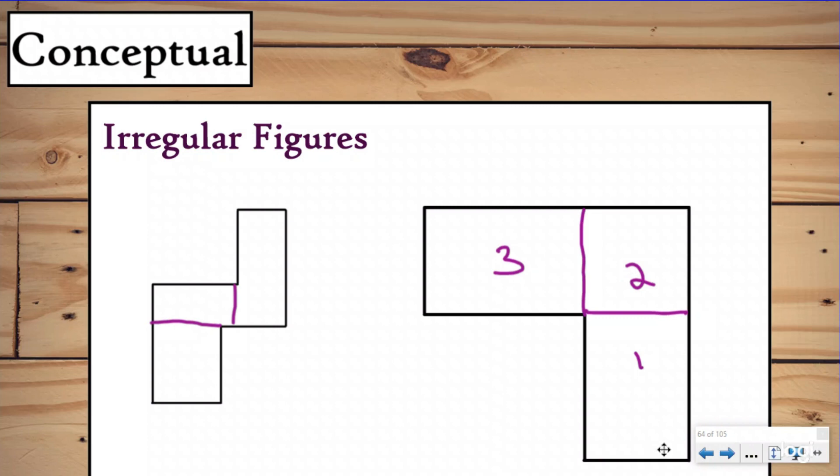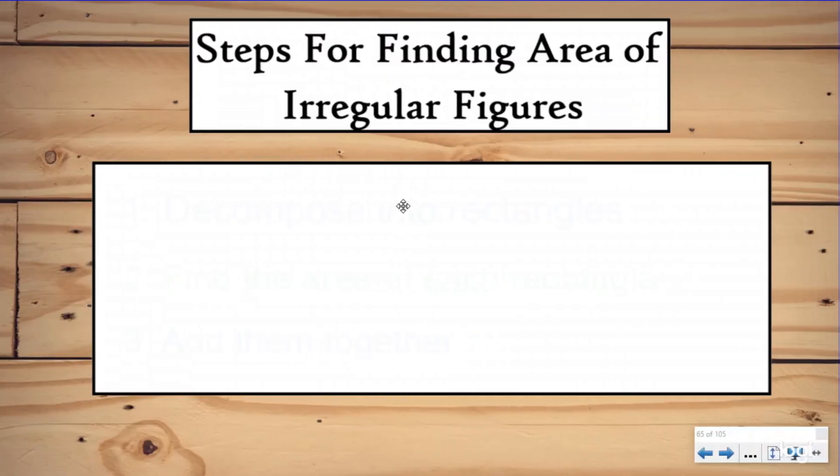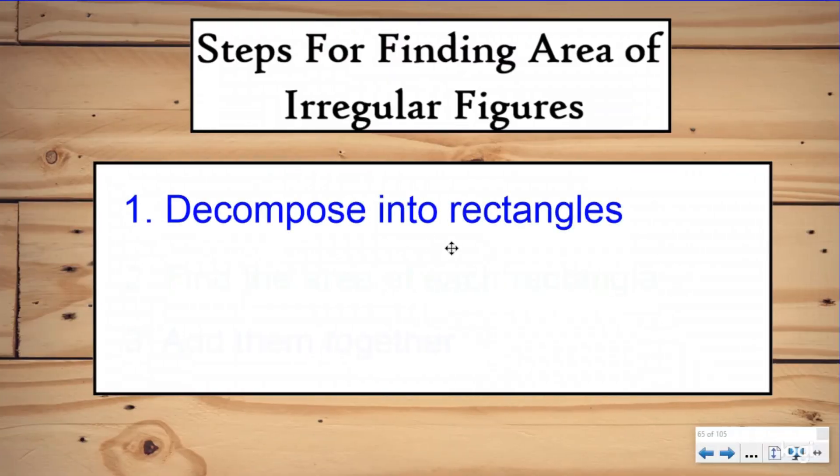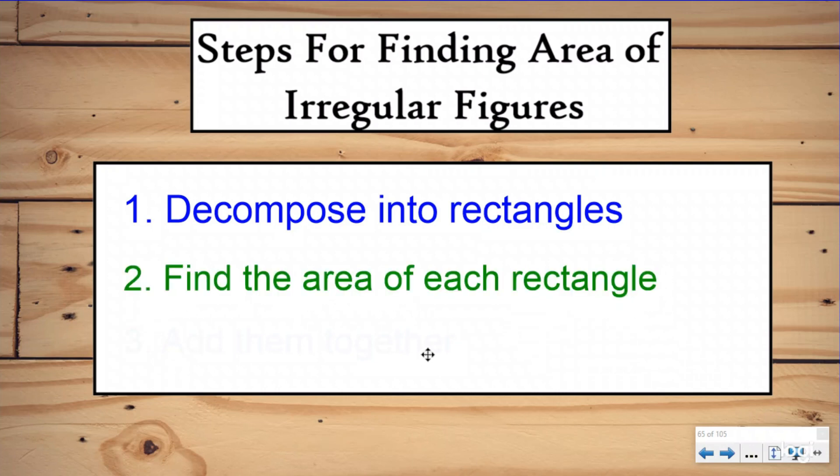Let's take a look at some steps that we can use to find the area of these types of shapes. First step: we're going to decompose our irregular figures into rectangles just like we just did. We split them into two or more rectangles that made up the shape. Once you decompose them, you're going to find the area of each of the rectangles, and then you're going to add those areas together. Those are our three steps.